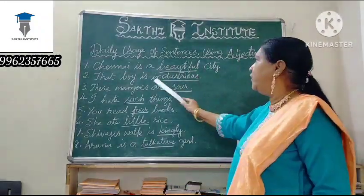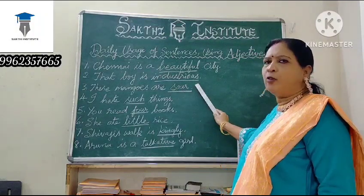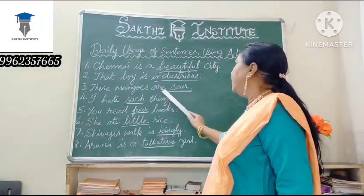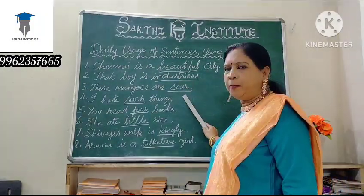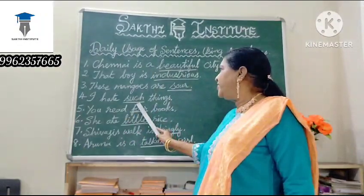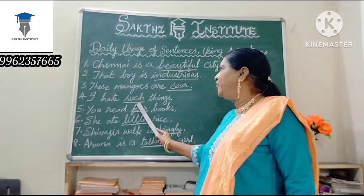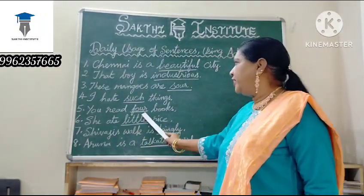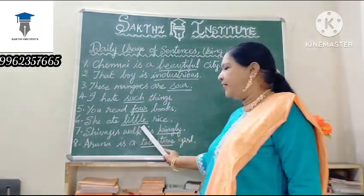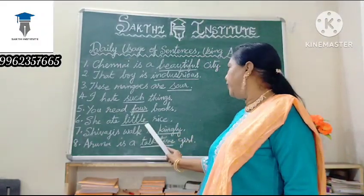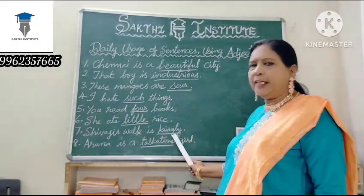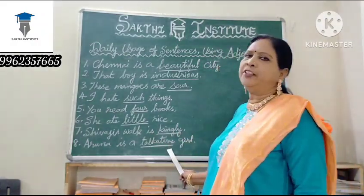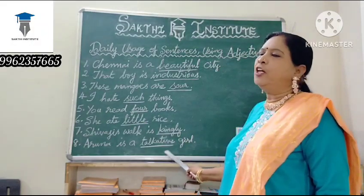Beautiful is the adjective in 'Chennai is a beautiful city.' Industrious is the adjective in 'That boy is industrious.' Sour is the adjective in the mangoes sentence. Such is the adjective in 'I hate such things.' Four is the adjective in 'You read four books.' Little is the adjective in 'She eats little rice.' Small is the adjective in 'Shivaji is a small place.' Talkative is the adjective in 'Aruna is a talkative girl.'